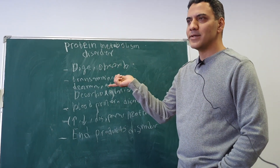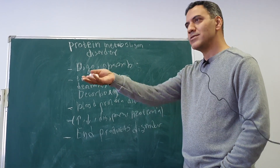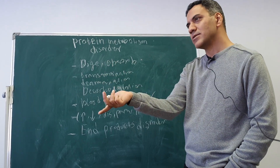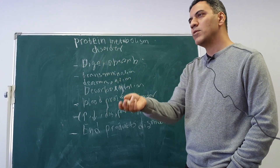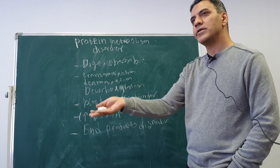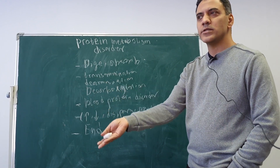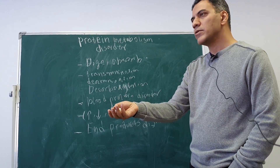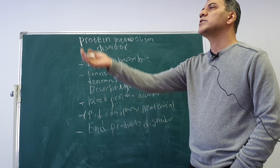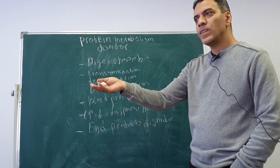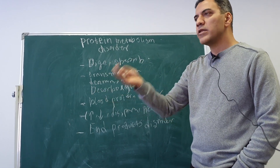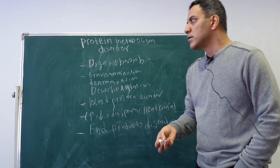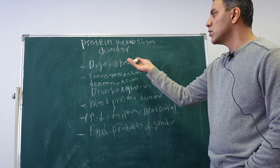Start! Protein metabolism disorder. Protein is a very important substance in our body because it is building material. Protein consists of polypeptide chains, and every peptide chain consists of amino acids. We have multiple amino acids — about 10 or more that we can receive from outside. Other amino acids we can synthesize in our body. Then, about protein metabolism disorder.